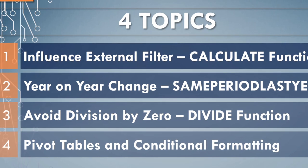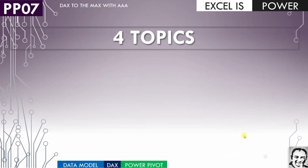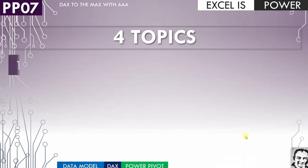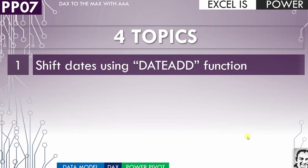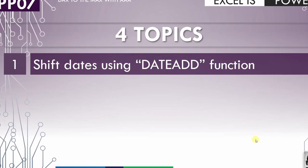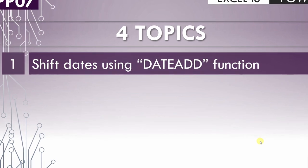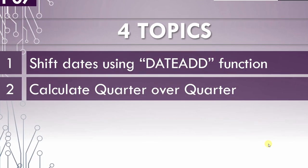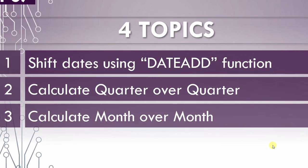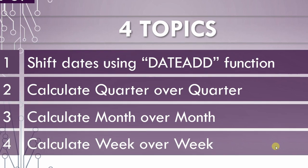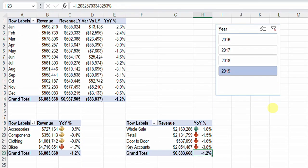In this video PP07 we are going to discuss also four topics. First, how we can shift dates forward or backward using the DATEADD function. Then we are going to use the same function, DATEADD, to calculate three things: quarter over quarter change, month over month change, and finally week over week change. We are going to start from the finish file reached at the previous video PP06.